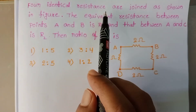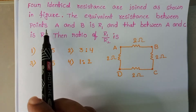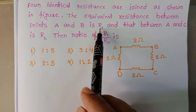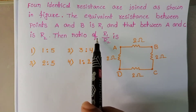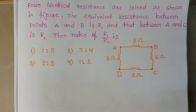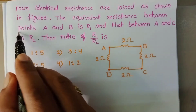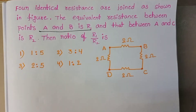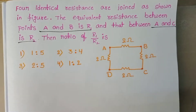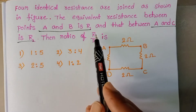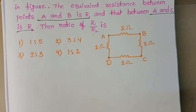Four identical resistors are joined as shown in the figure. The equivalent resistance between points A and B is R1, and that between A and C is R2. We want to find out the ratio of R1 by R2. Observe the circuit diagram.